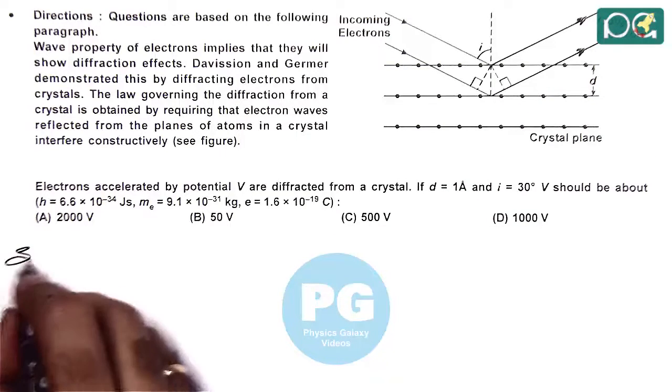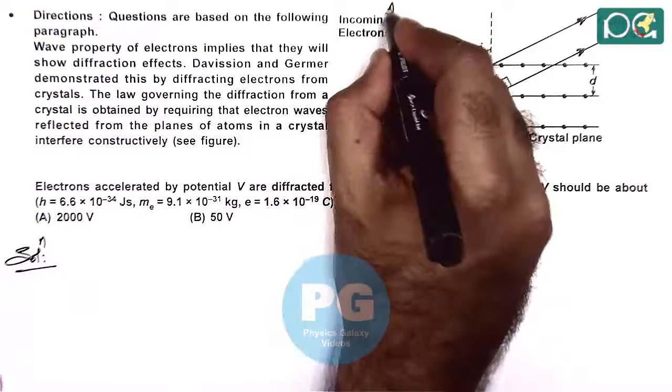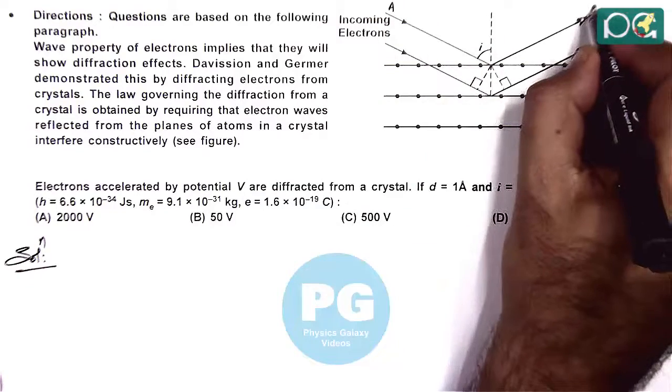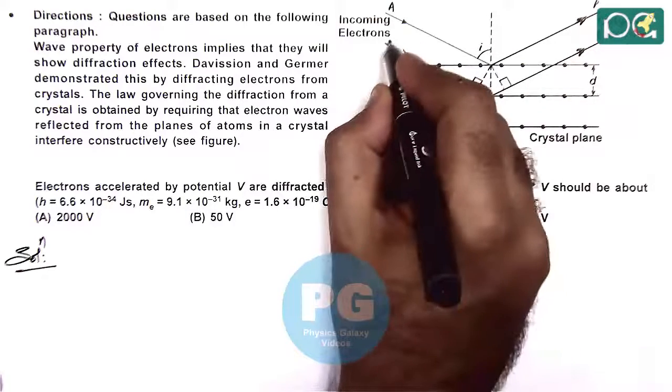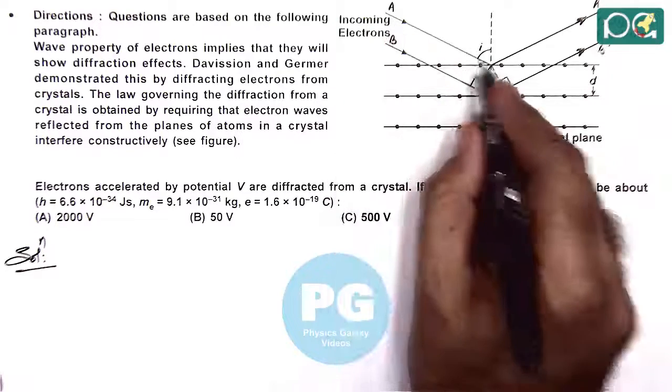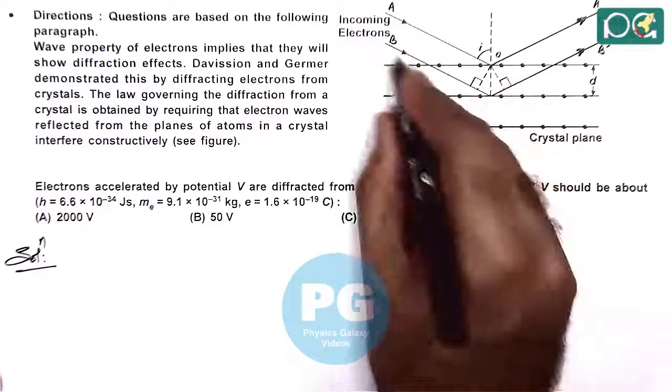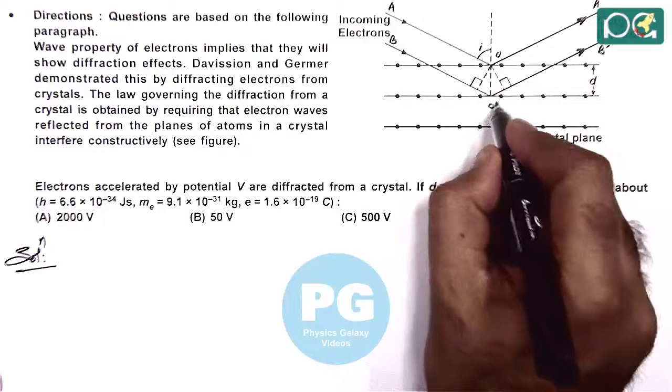So first if we talk about the path difference, we can say there is a wave A going as A dash, B going as B dash. If we consider A is reflected from a point O and B is reflected from a point O dash.